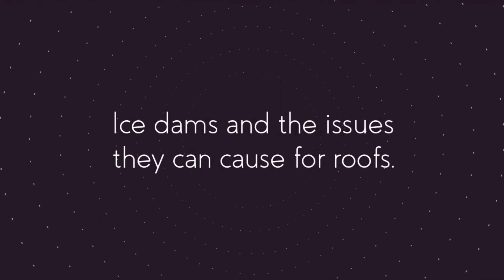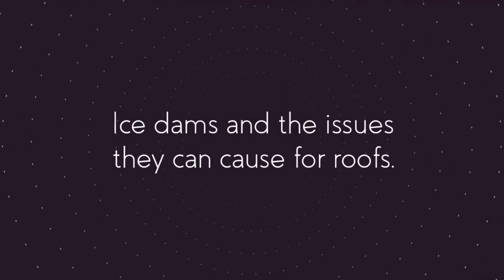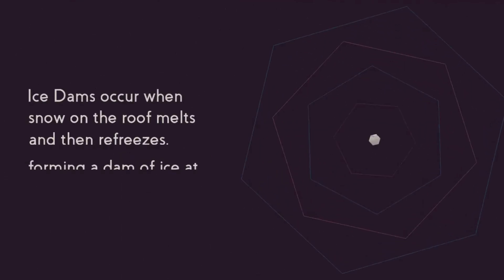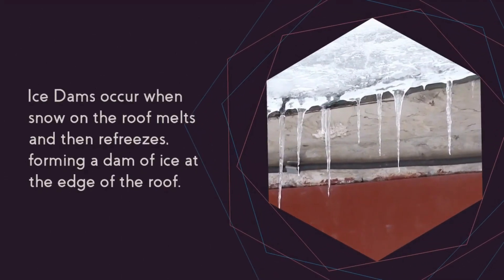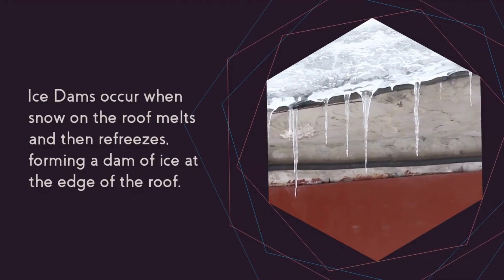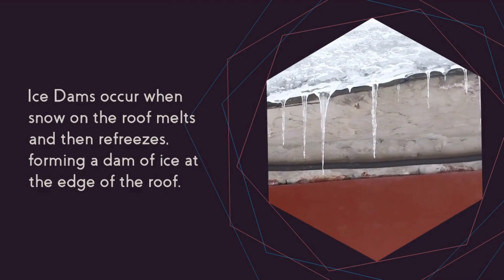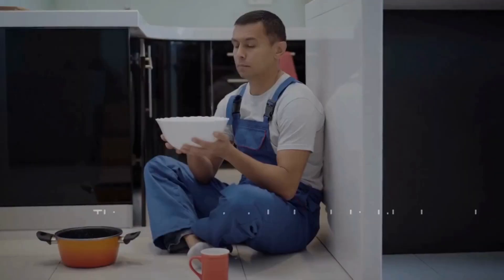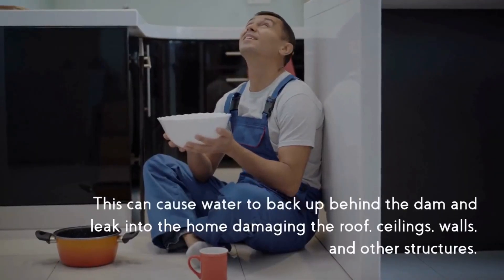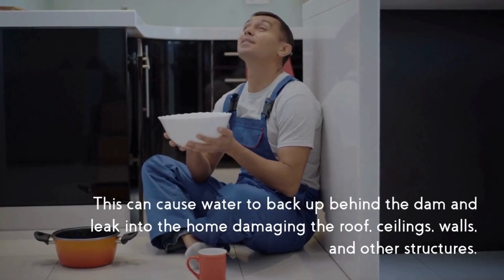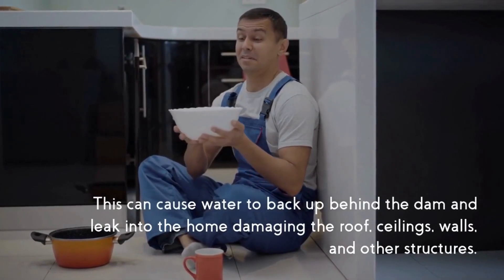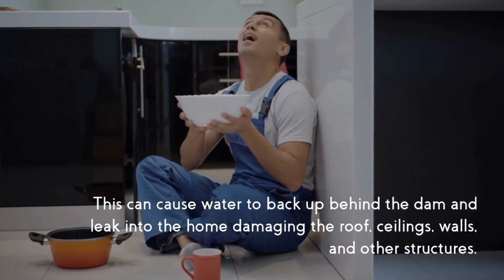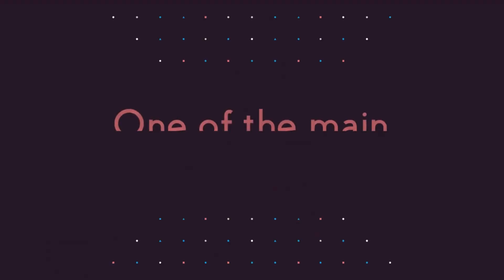Ice dams occur when snow on the roof melts and then refreezes, forming a dam of ice at the edge of the roof. This can cause water to back up behind the dam and leak into the home, damaging the roof, ceilings, walls, and other structures.